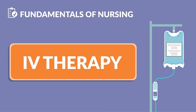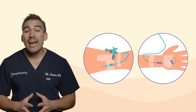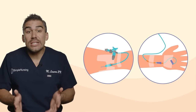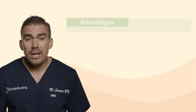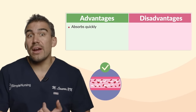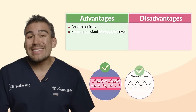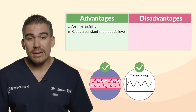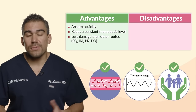Now for IV therapy. Remember, IV administration through peripheral veins is the fastest route to give any medication into the body. There are advantages and disadvantages here. For advantages, we have absorption that is very quick, keeps a consistent therapeutic level inside the blood, and less damage than other routes.